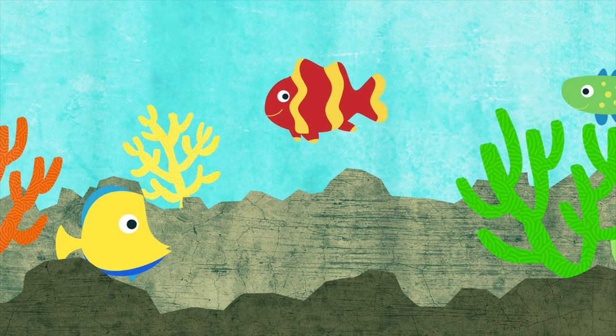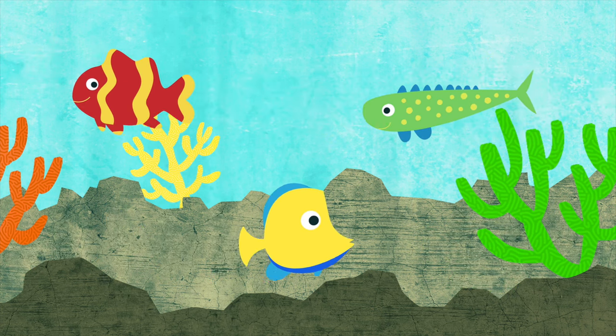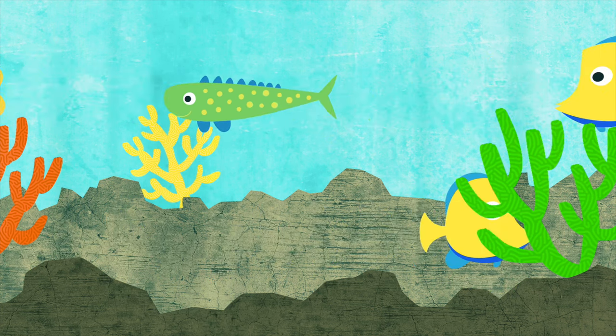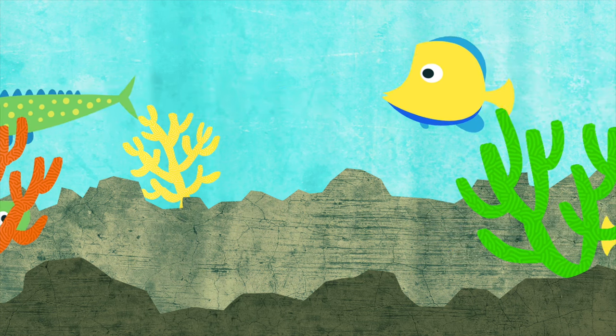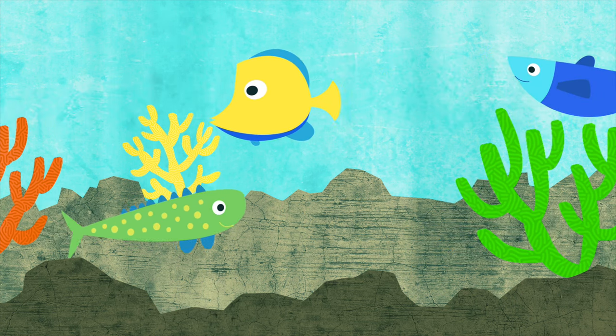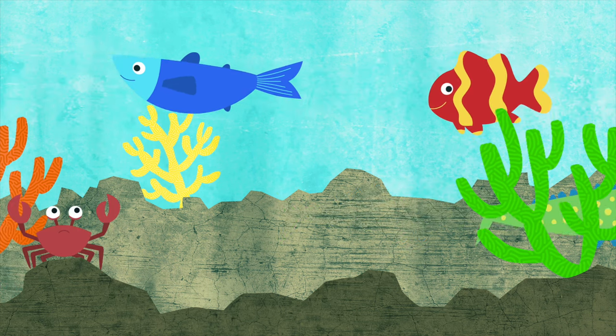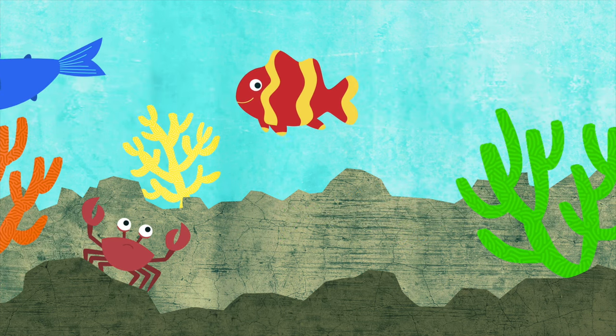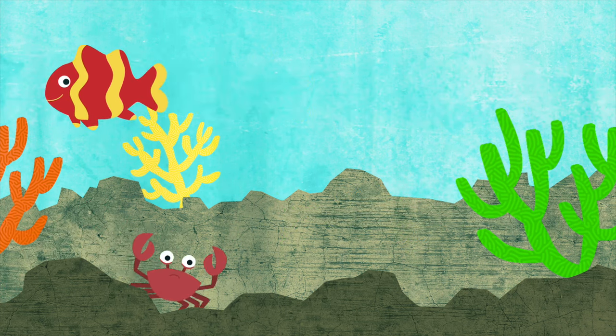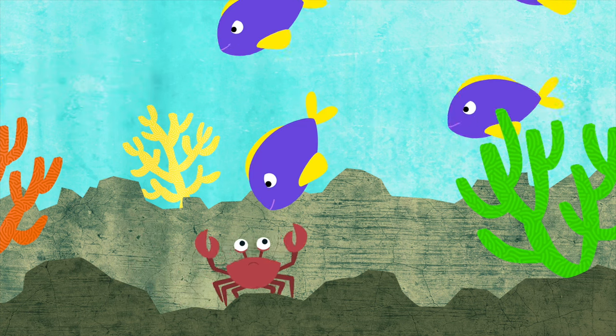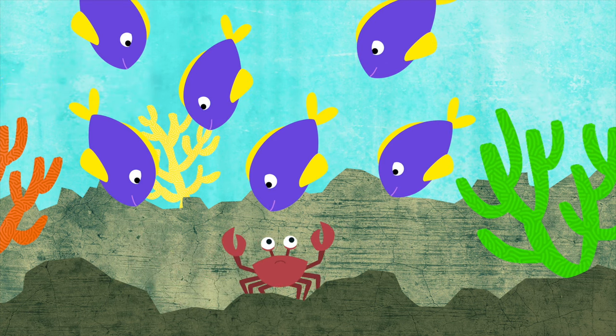Lots of different sea creatures lived in the coral reef. Finley and her friends were nice to all of the other creatures, but they weren't nice to the crab. Every time they swam by the crab,